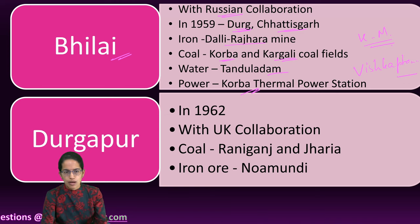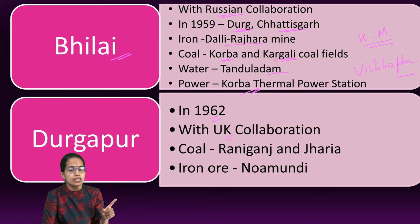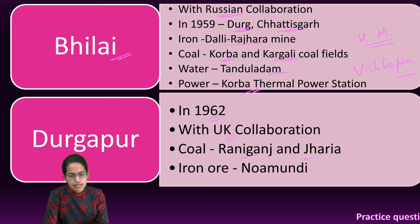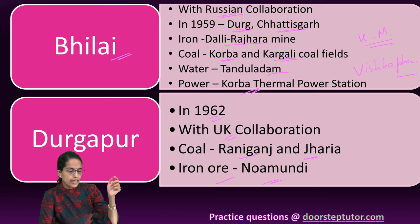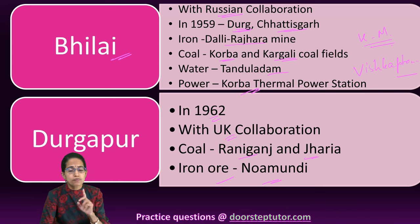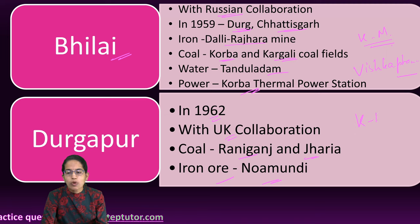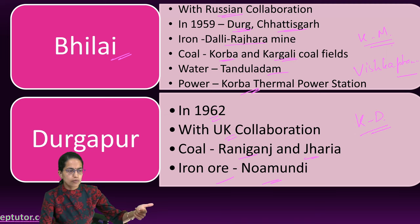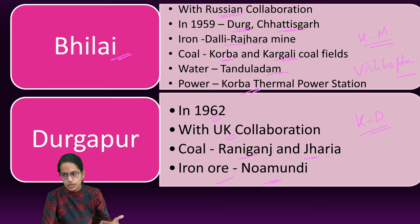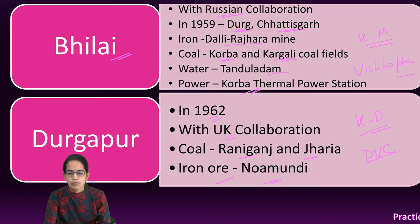Durgapur came in 1962 during the Second Five-Year Plan with collaboration of the UK. Coal was obtained from Raniganj and Jharia, and iron from Noamundi — similar to the iron obtained for TISCO. Durgapur is important and is on the Kolkata-Delhi railway line, whereas Bhilai is on the Kolkata-Mumbai railway line. Power is obtained from the Damodar Valley Corporation, also known as DVC.